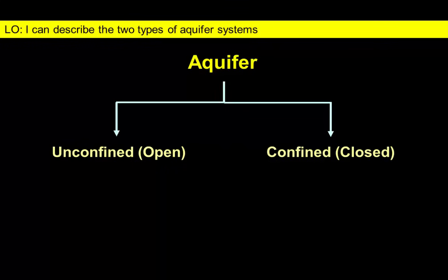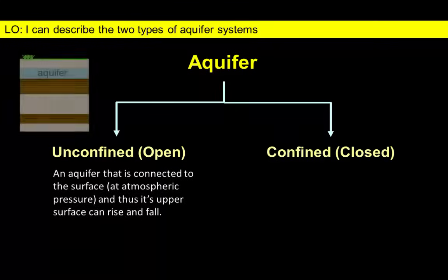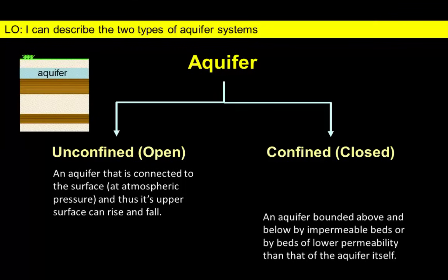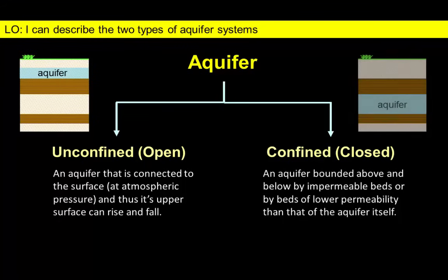Most aquifers fall into one of two types. Unconfined or open aquifers are directly connected to the Earth's surface. In contrast, confined or closed aquifers are separated from surrounding rock layers by confining units above and below the aquifer. Let's take a closer look at each type.